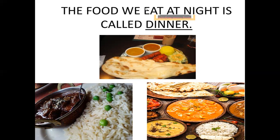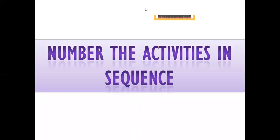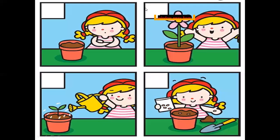Move on to next. Number the activities in sequence. Sequence means correct order. See the images, children. The girl is going to plant. Which activity comes first, children? Let's try to find out.